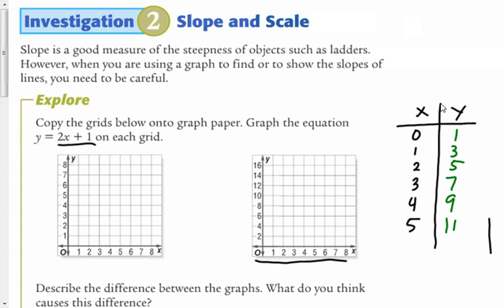And so I'm going to graph those on each of these graphs. If I graph it on the first graph, my point 0, 1 is right here. My second point 1, 3 is right here. 2, 5 is here.